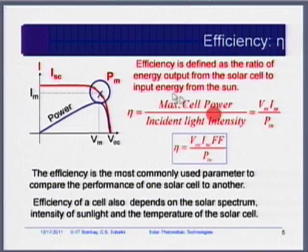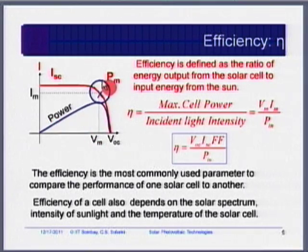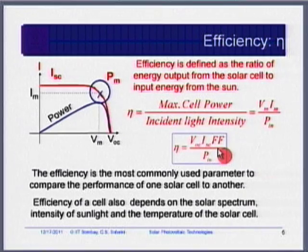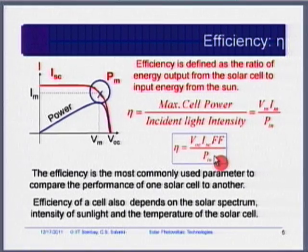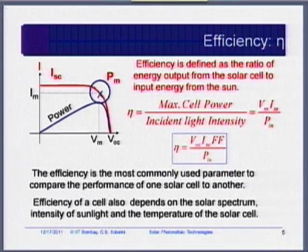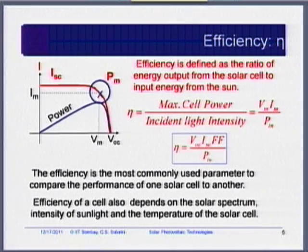The various parameters are ISC, VOC, VM, IM, PM, etc. If you are using JSC as current density, you should multiply by the area as well. P-in is the power density of solar radiation under standard test conditions: 1000 W/m² at air mass 1.5 G (global) spectrum.